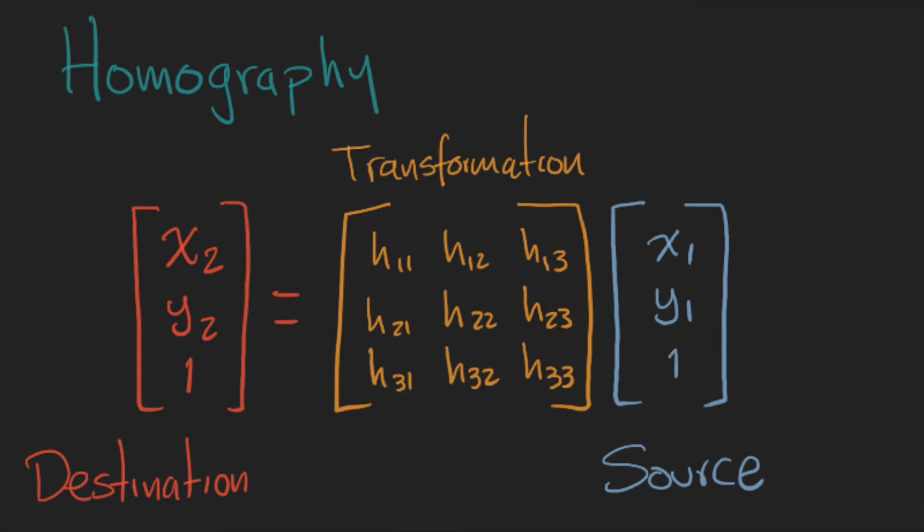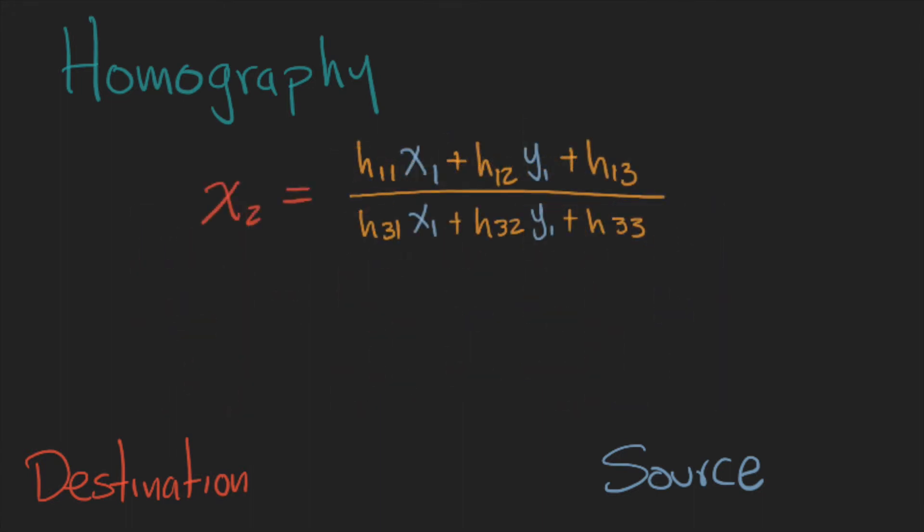So we can take this formula and rewrite it to find the coordinates in the destination image in this way. Then we rearrange the terms, and then we can take it back to the matrix form in this way.